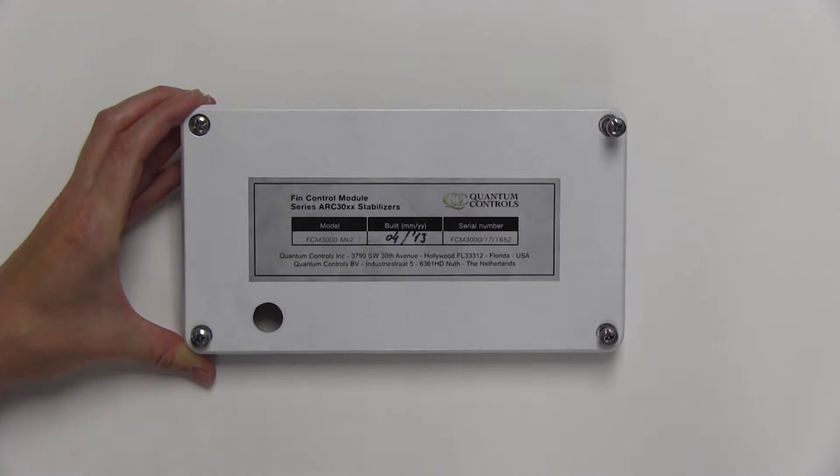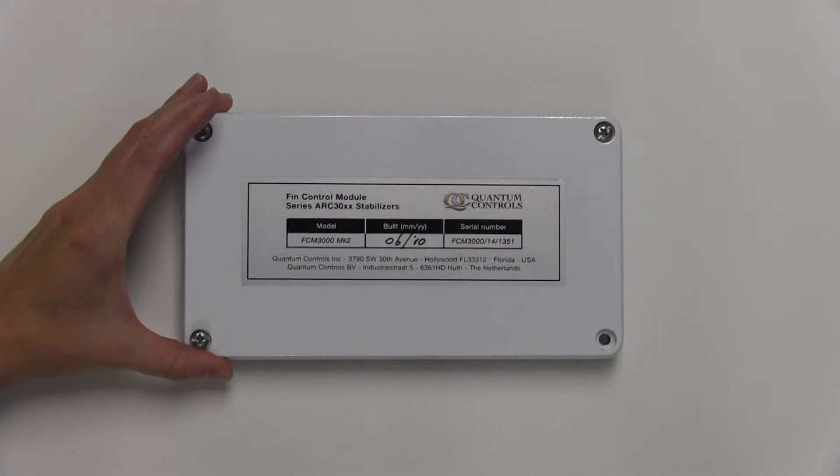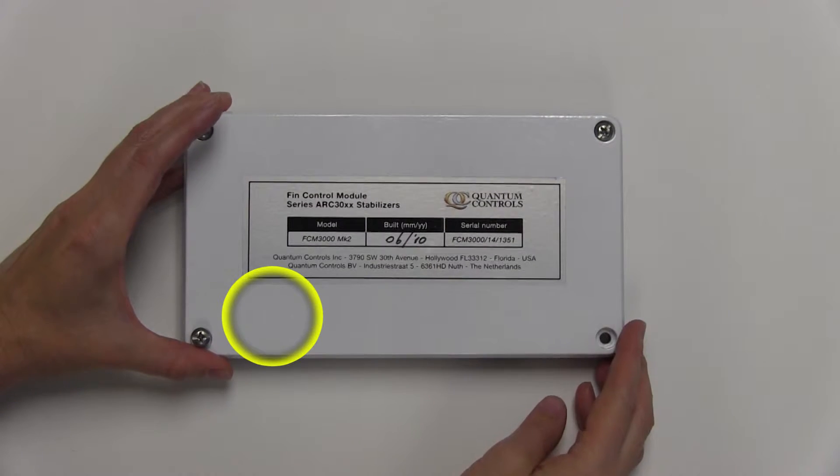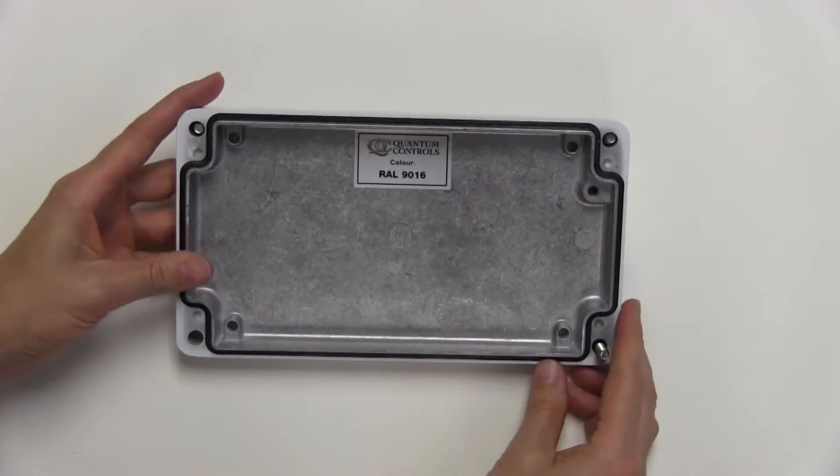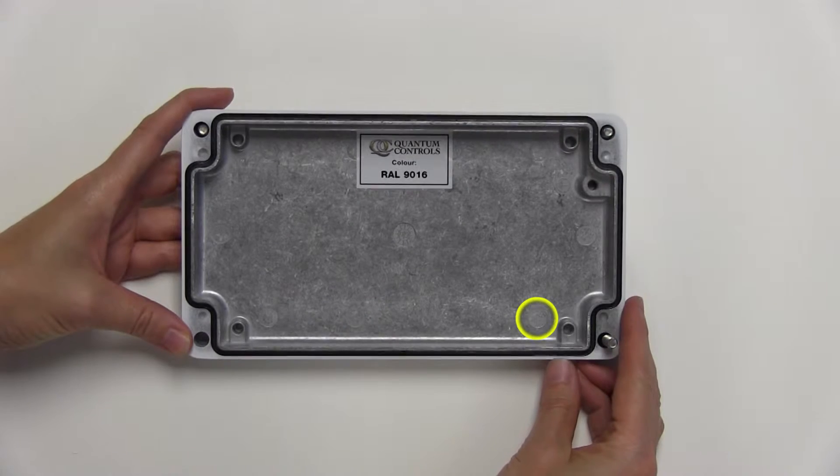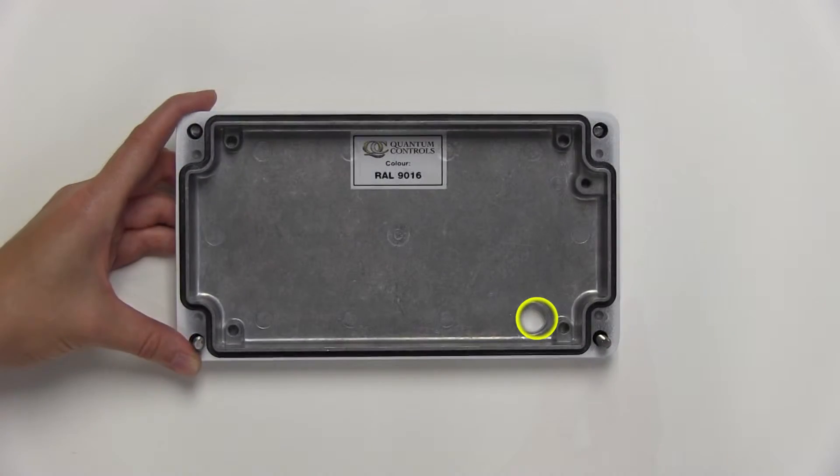To avoid conflict with the additional board that will be installed inside the fin control module, it is recommended to drill the hole in the bottom left corner. For convenience, position the hole to align with this circular casting impression on the inside of the cover.